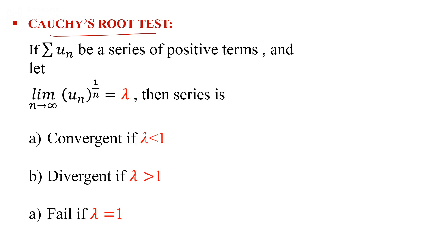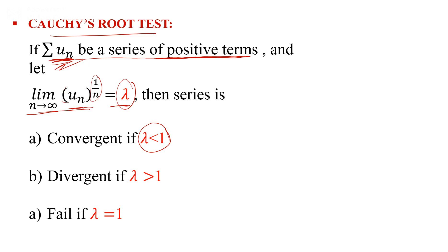Now we discuss the Cauchy root test. If summation u_n is a series of positive terms, and we compute the limit as n→∞ of u_n^(1/n) = lambda: if lambda < 1, the series is convergent; if lambda > 1, the series is divergent; if lambda = 1, the Cauchy root test fails and we apply another test.